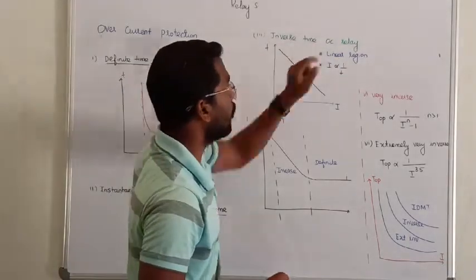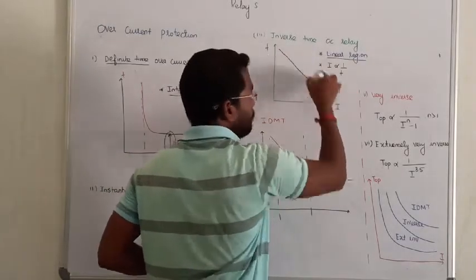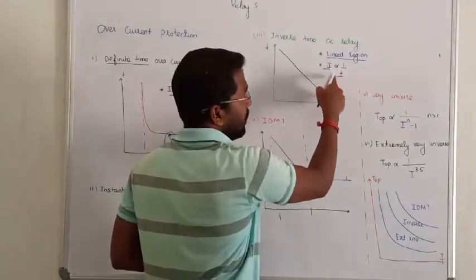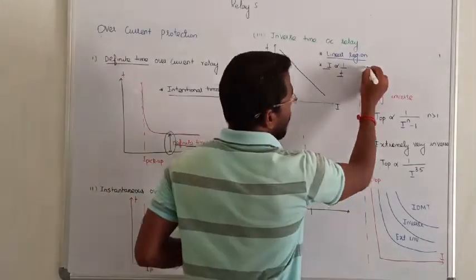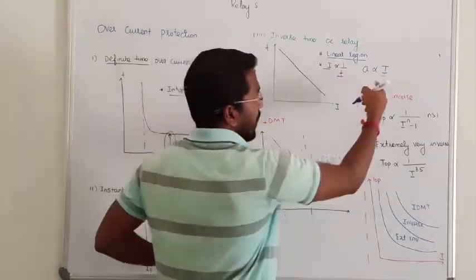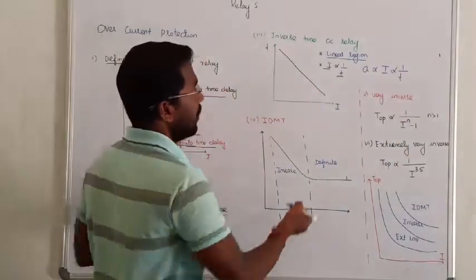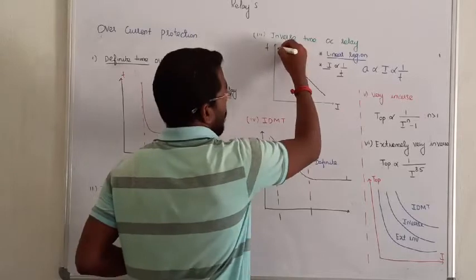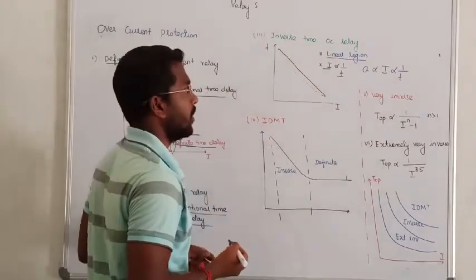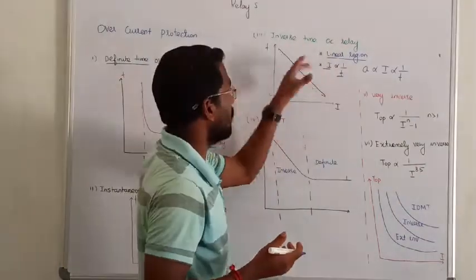That is called inverse time overcurrent relay. In the inverse time overcurrent relay, the relay operates in the linear region. The relation between current and time is inversely proportional. If you are looking at the curve, it will look like a parabolic curve. But ideally they give you a linear curve.